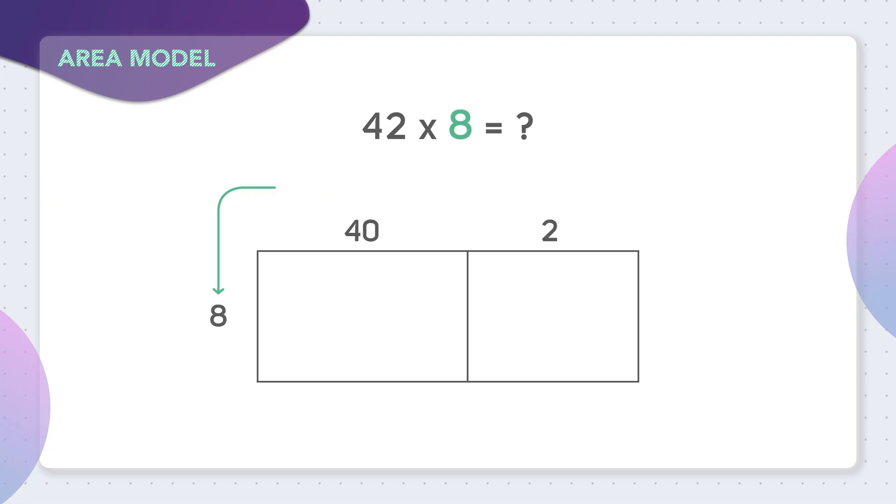Then you multiply each of these pieces by 8. In the first box, you multiply 40 times 8, by solving 4 times 8, which is 32, and then adding a 0. To get that 40 times 8 is 320.